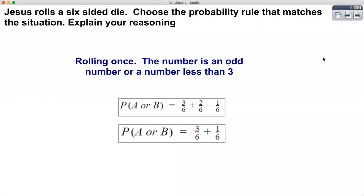On to the next one. Same six-sided die, but now Jesus is rolling the die once. The number is an odd number or a number less than three. What is the probability such that the number is an odd number or a number less than three? What word am I emphasizing here? The word 'or' — because every time I see 'or', I know that some sort of addition is going to happen. This one is a bit more complicated than straight addition, but addition will be involved.